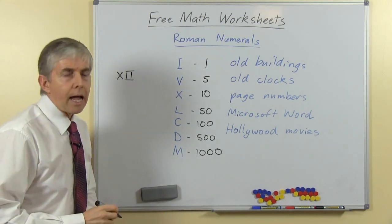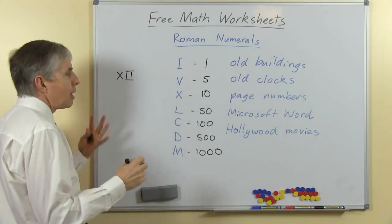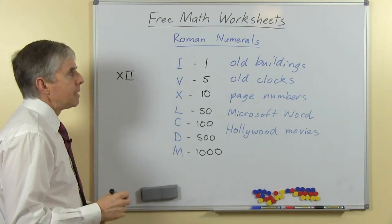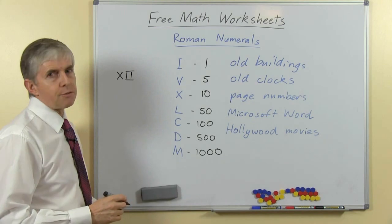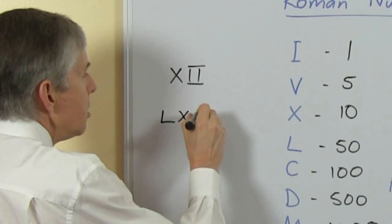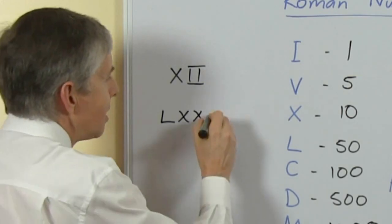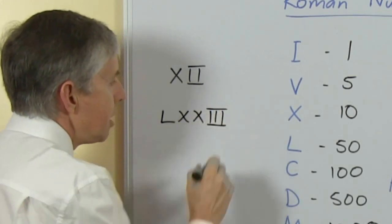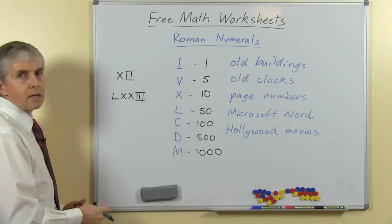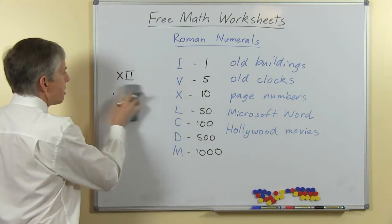If you have a relative who is say a grandparent who is let's say 73, how would you write 73? Well you'd write L for 50, 2 X's for 2 tens, and then 3 would be 3 I's. So you can make up values like that by just joining them together and adding them next to each other.